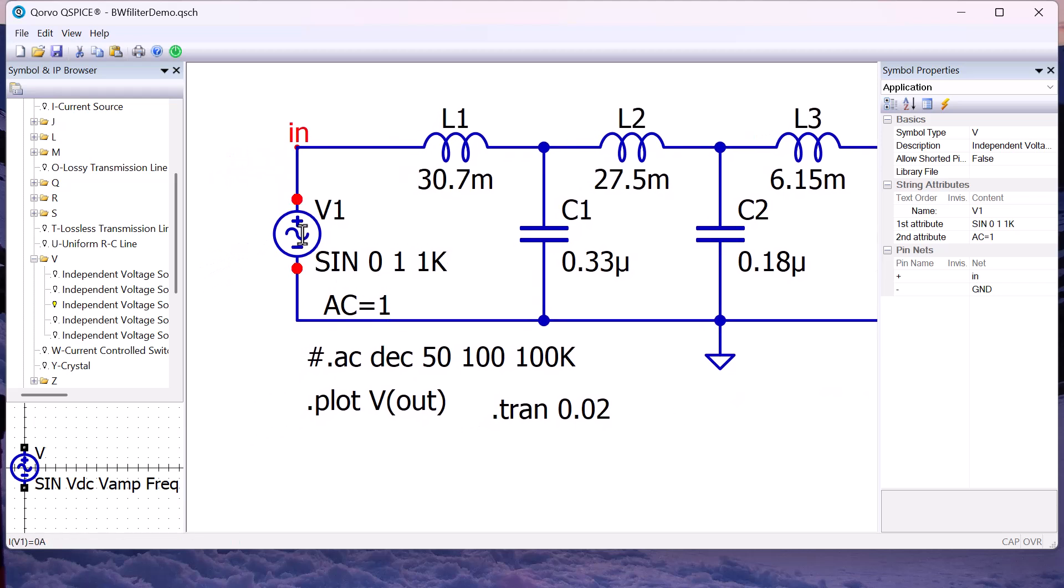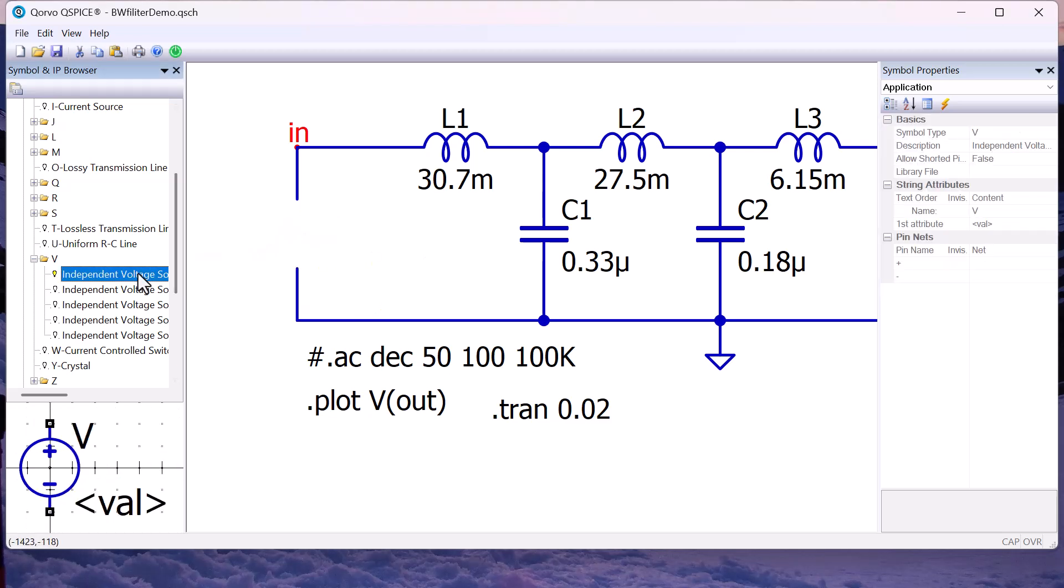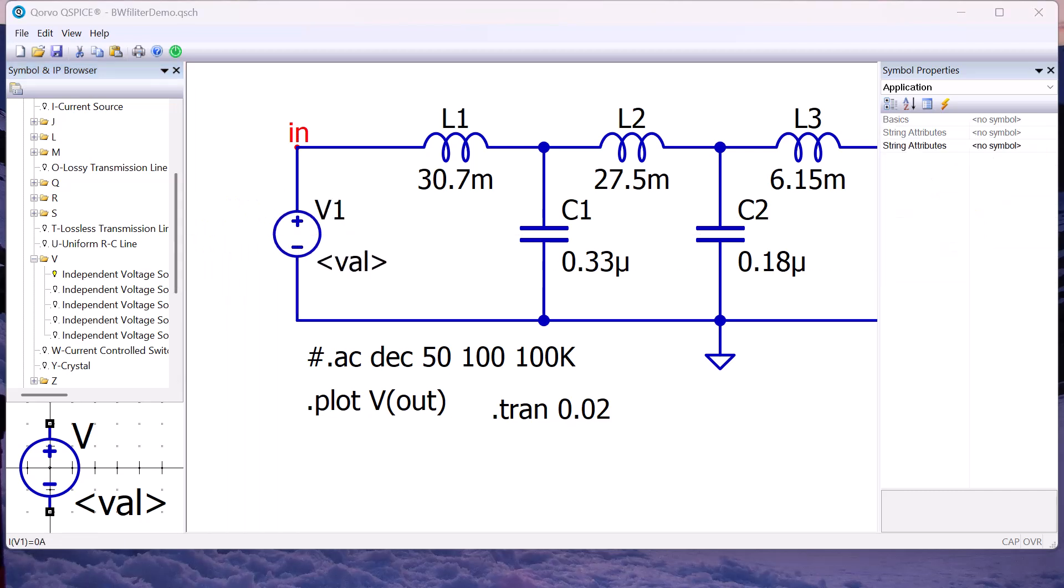Delete the sine wave source. Go into voltage sources and pick the first one, VC source. Drag the DC source into the schematic. Give it a DC value of 1.